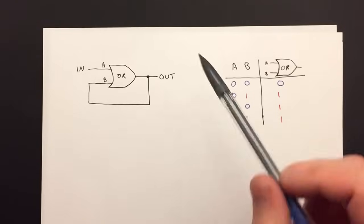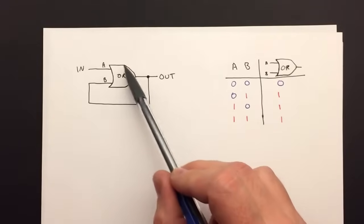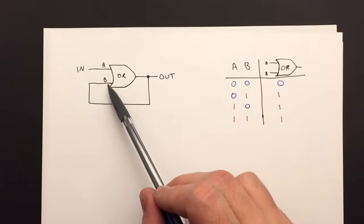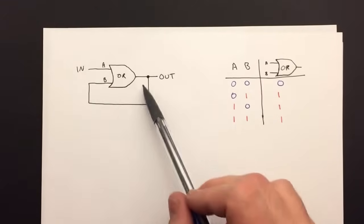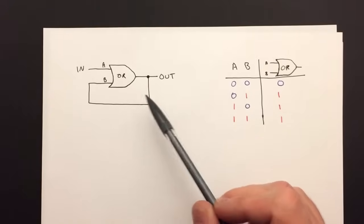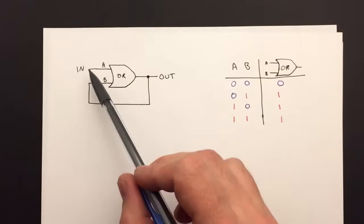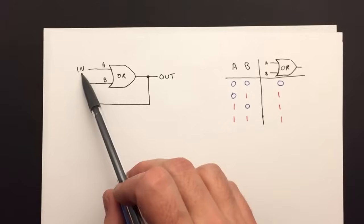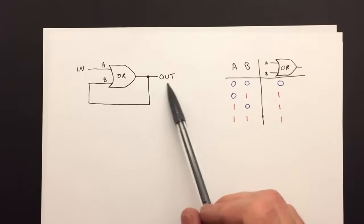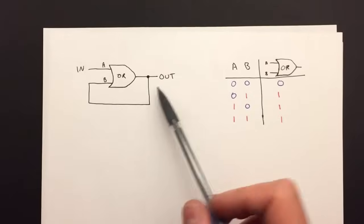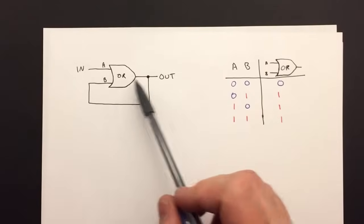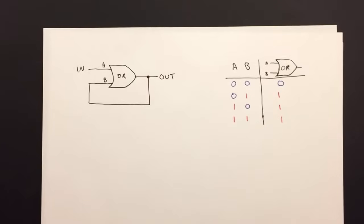In this video, I want to start thinking about scenarios where we have a gate where the output is connected back to the input, or some series of gates where the output is connected back to the input. You might think we can just come up with a truth table where the input can be either a 0 or a 1, but what we'll see is that it's not quite as simple as that.